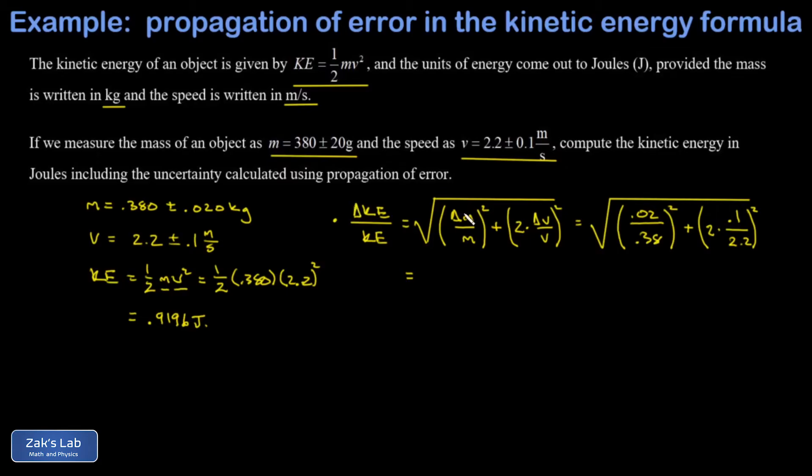That gives us the relative uncertainty in the kinetic energy—that's ΔKE divided by KE. When I run the numbers on this, I get 0.105.